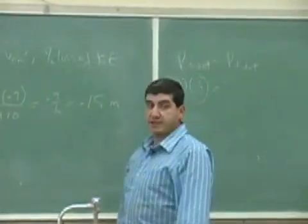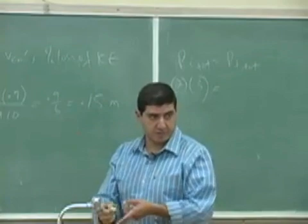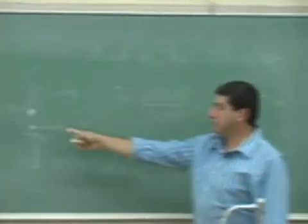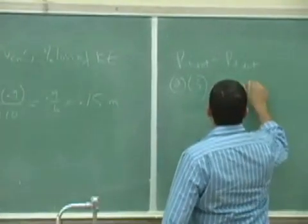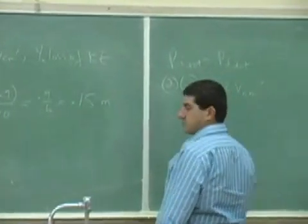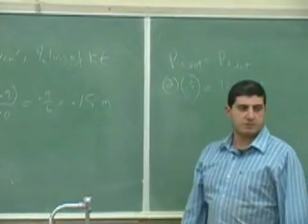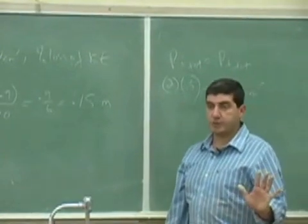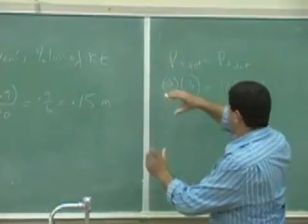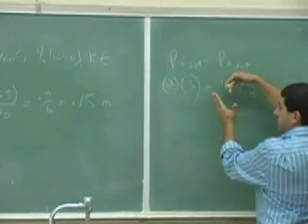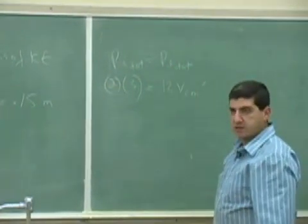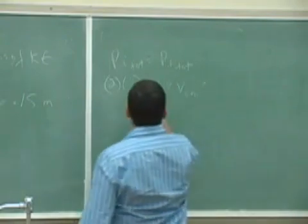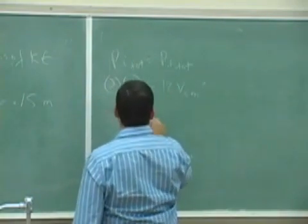That's equal to the final momentum of the system, which is 2 plus 10, that's 12 kilograms, times v center of mass prime. And that's it for linear momentum. The system has a mass of 12 kilograms, and it translates at a velocity of v center of mass prime. So that's going to be 6 over 12, that's 0.5 meters per second.